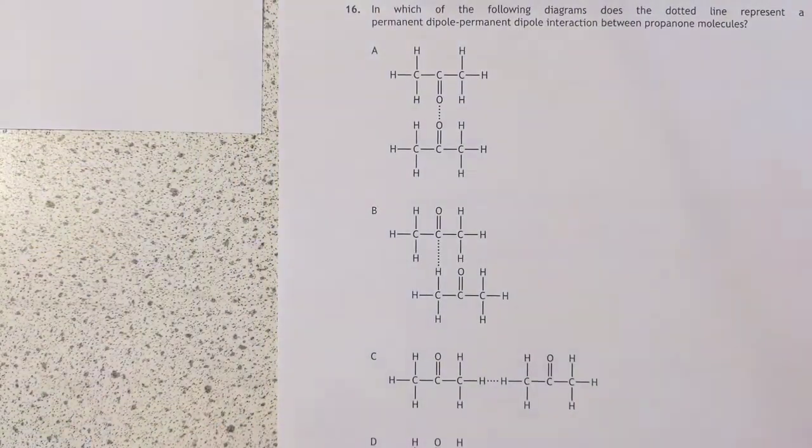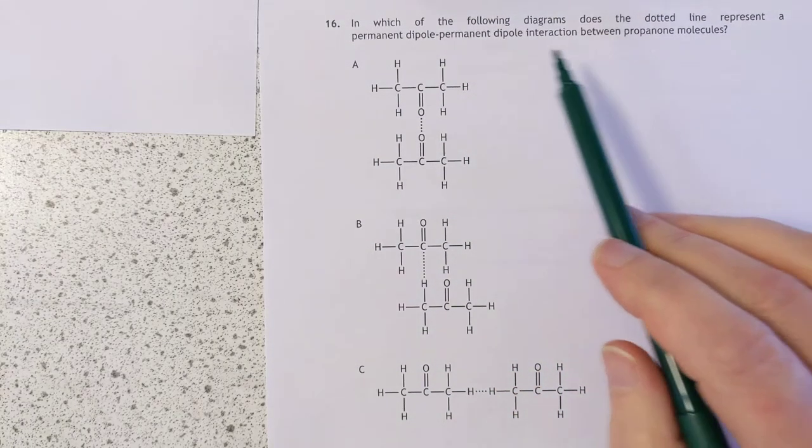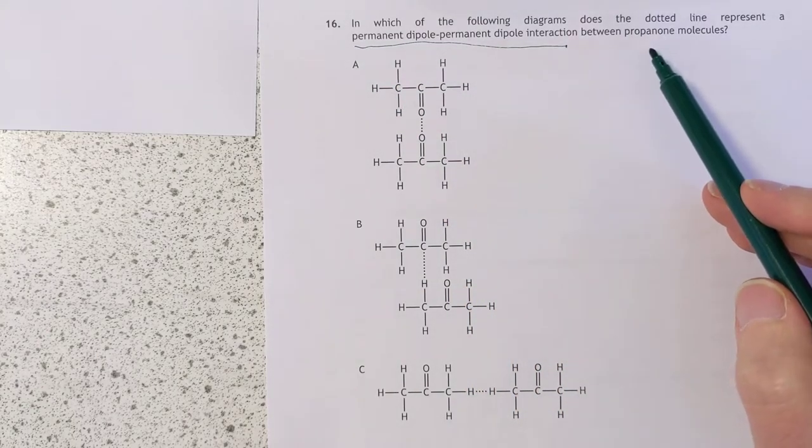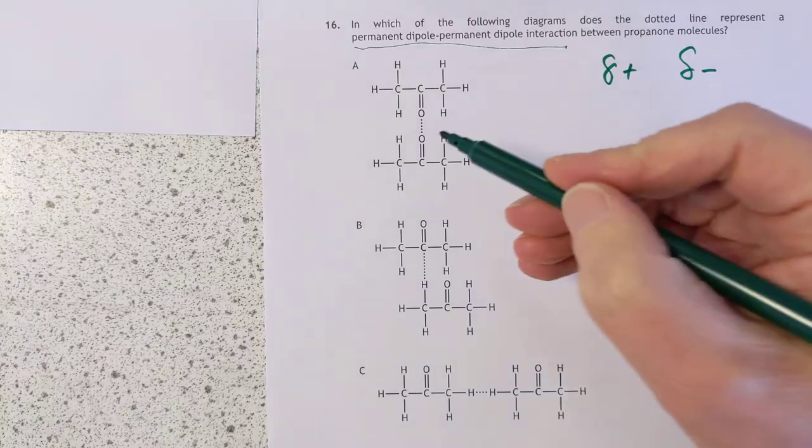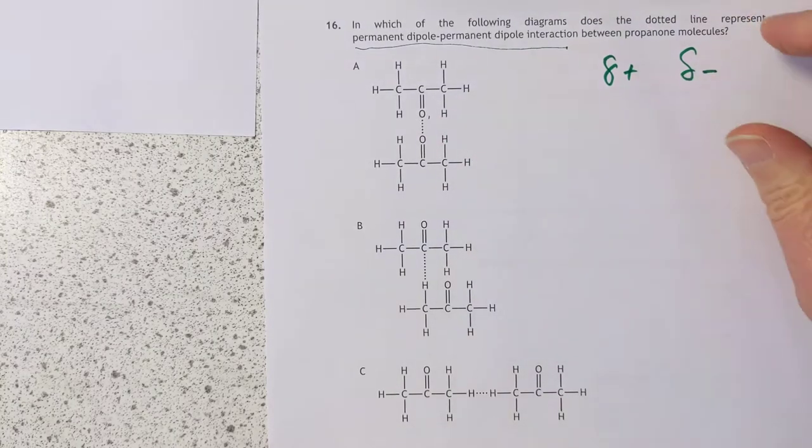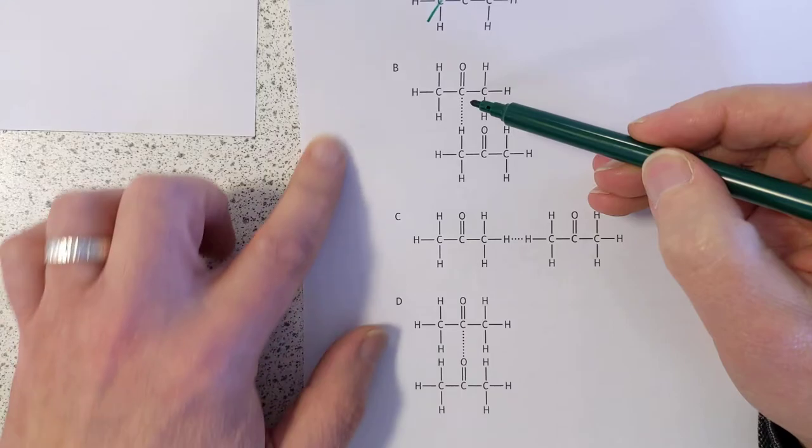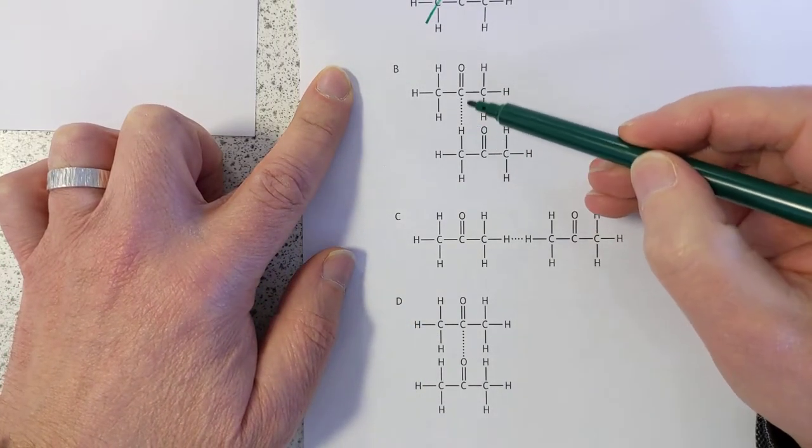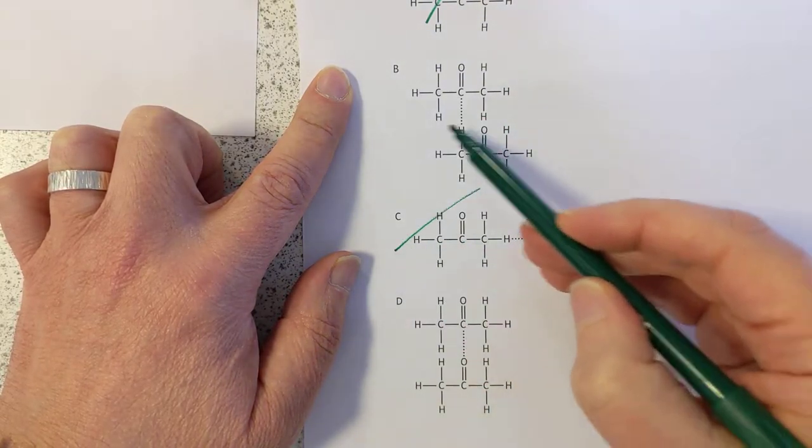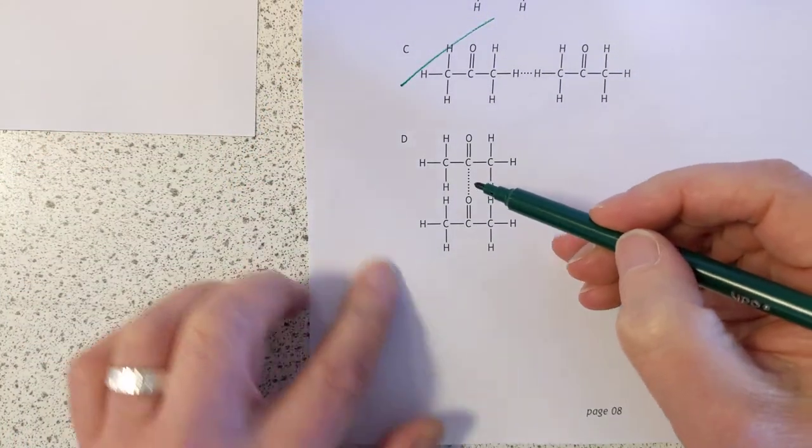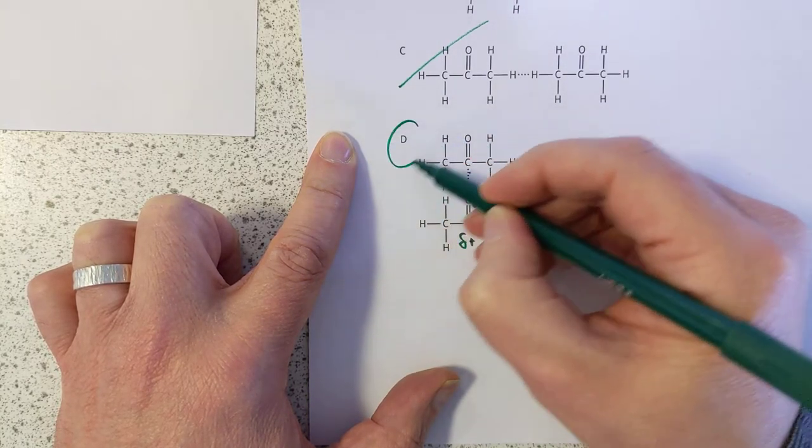Question 16: In which of the following diagrams does the dotted line represent a permanent dipole-permanent dipole interaction between propanones? You're looking for something that acts between a delta plus and a delta minus. If it's between the same two atoms, I don't think so. Definitely not. The delta in electronegativity between carbon and hydrogen is not enough to cause a dipole-dipole interaction. This one here, we've also got the same two atoms, so that is out, which leaves us with D. This is delta plus and that is delta minus. So you're going to get your dipole-dipole interaction.